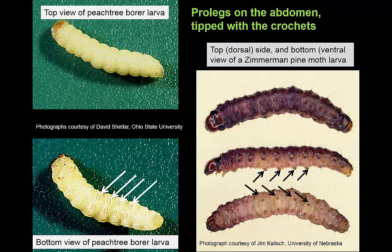For example, in the peach tree borer, the larval picture on the top could look like a round-headed borer or a clearwing borer larva, but flip it over and there are the prolegs. Another example is the Zimmerman pine moth, where you can see very short prolegs — in this case, the hooks are in a little circular pattern tipping the prolegs. So caterpillars that develop within trees will have prolegs that are very reduced, but what remains are the crotchets — those little hooks at the end of the prolegs.